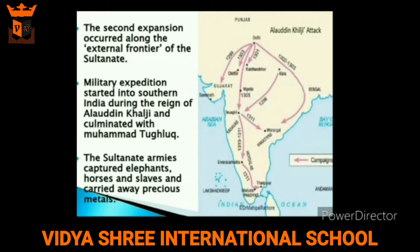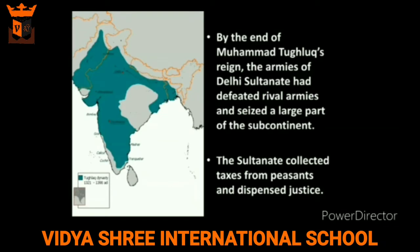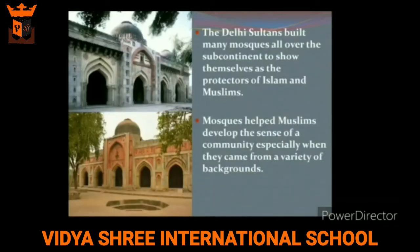The second expansion occurred along the external frontiers of the Sultanate. Military expeditions started into southern India during the reign of Alauddin Khalji and culminated with Muhammad Tughlaq. The Sultanate armies captured elephants, horses, and slaves, and carried away precious metals. By the end of Muhammad Tughlaq's reign, the armies of the Delhi Sultanate had defeated rival armies and seized a large part of the subcontinent. The Sultanate collected taxes from peasants and dispensed justice.